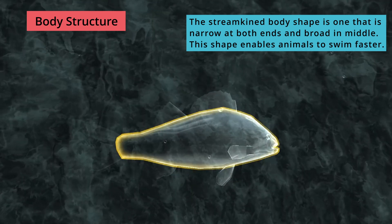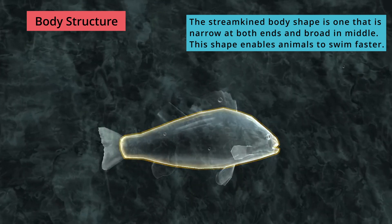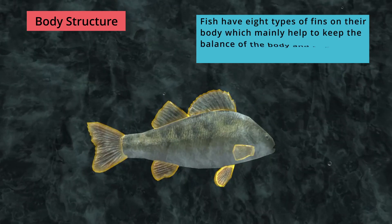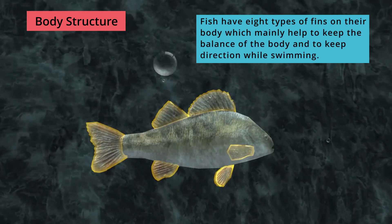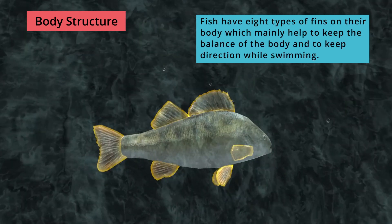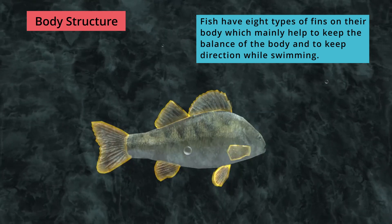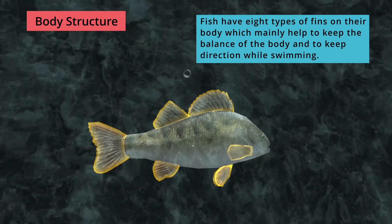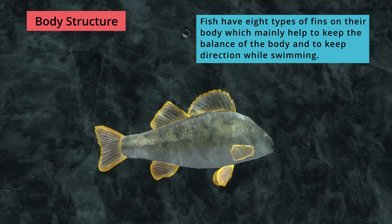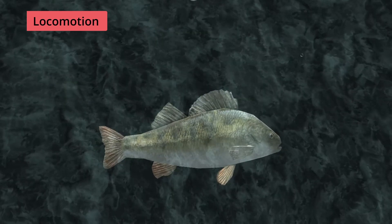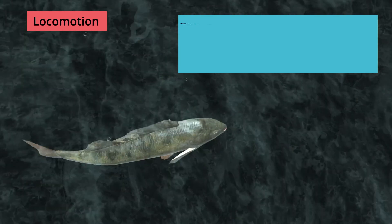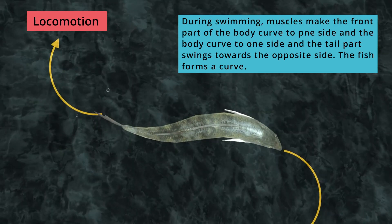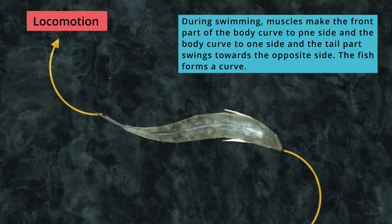Fins: fish have eight types of fins on their body, which mainly help to keep the balance of the body and to keep direction while swimming. Locomotion: during swimming, muscles make the front part of the body curve to one side and the tail part swings towards the opposite side.